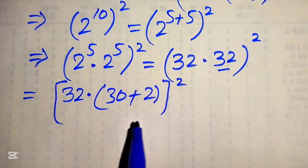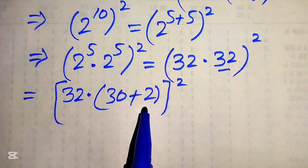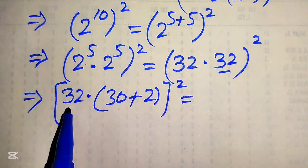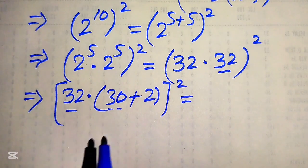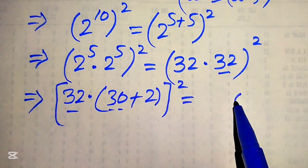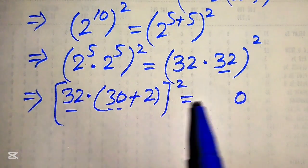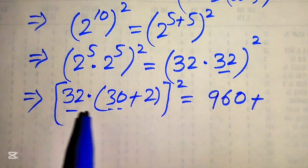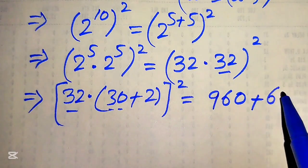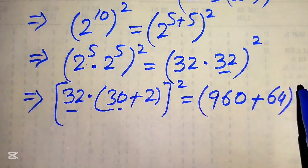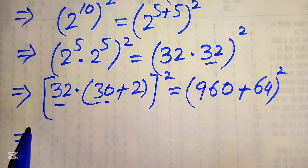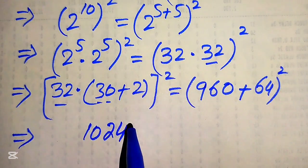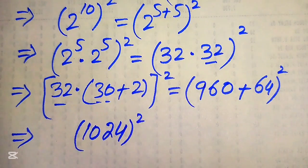We multiply 32 separately on both values, treating 32 as a two-digit number. 0 times this number equals 0, and 3 times this number gives 3 twos are 6, 3 threes are 9. Then 32 times 2 becomes 64. So we add 960 plus 64 and get 1024, whole squared.